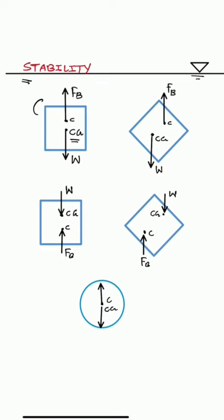If we give this body some displacement, then these two forces W and FB, they form a couple and the couple is trying to restore the position of this body and that makes it a stable equilibrium.